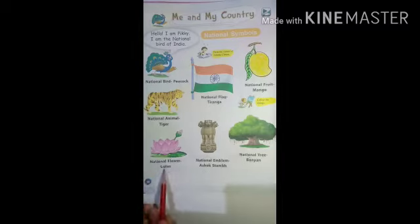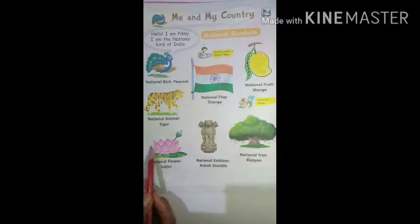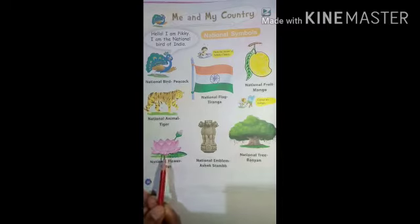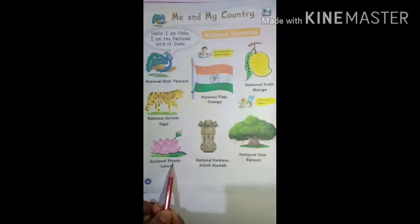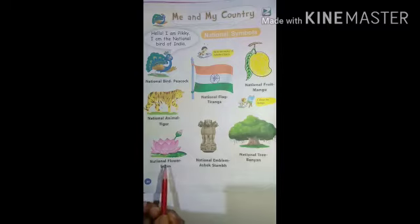National flower — lotus. It is our national flower. It grows in pond. Ye national flower kya hai? Rastriya phool kaun sa hai? Kamal.